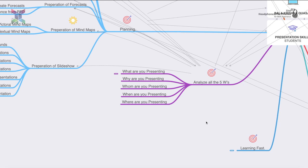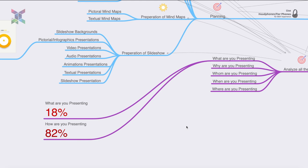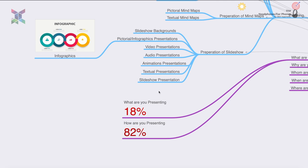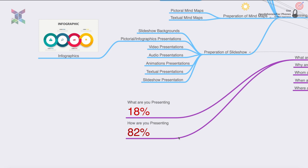Remember: what you are presenting is only 18% of the impact. How you are presenting is 82%, which includes your body language, the four P's, content presentation, and speech dynamics. This is why 82% of presentation skills depends on how you present — that is very, very important.